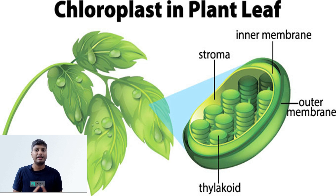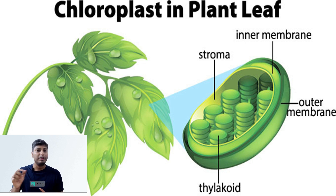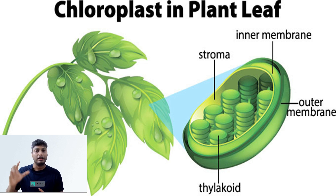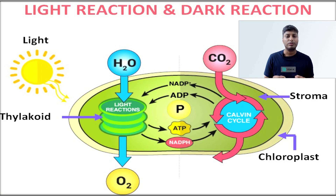As you can see in this picture, the chloroplast is a lens-shaped organelle. Inside the chloroplast there are many disc-like structures called thylakoids. A single disc-like structure is called a thylakoid, a group of thylakoids is called a granum, and many grana together are called grana. Inside the thylakoid, photosynthetic pigments are present which help in the absorption of sunlight.